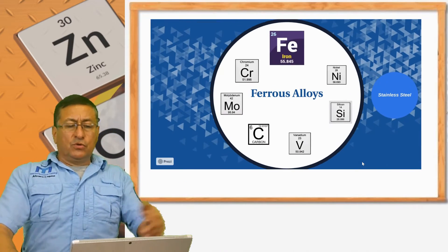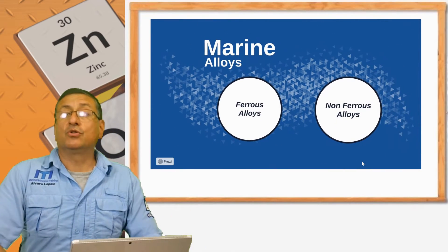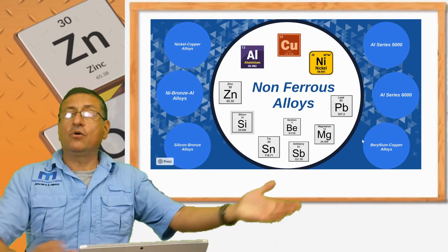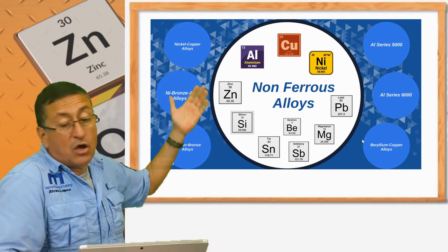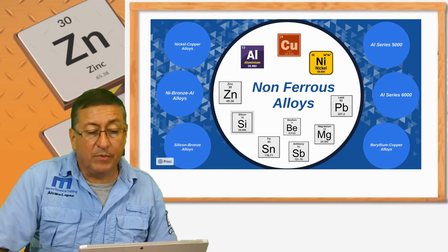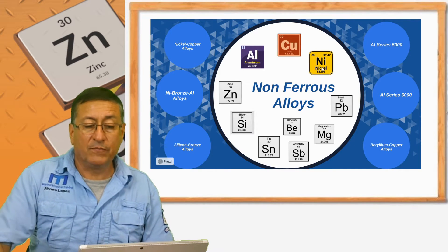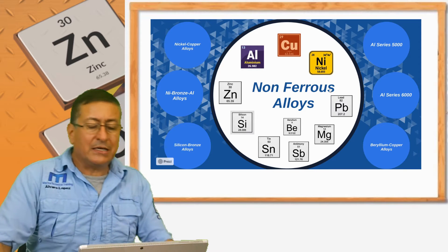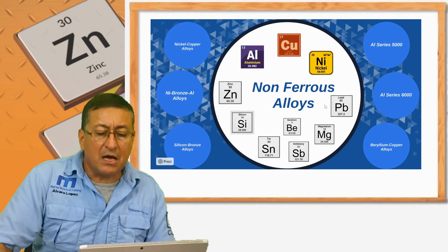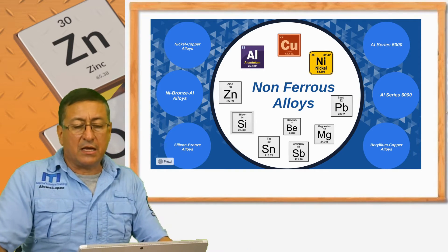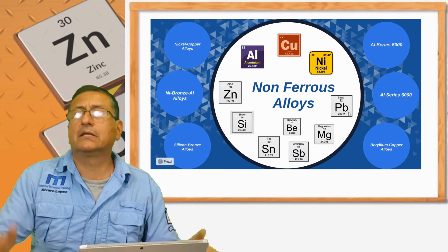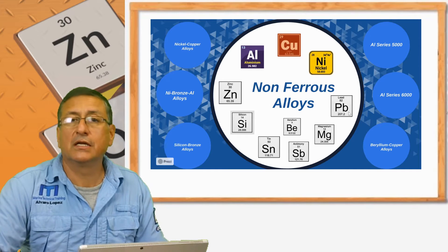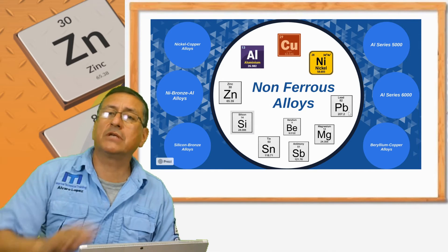Now we are going to continue with the non-ferrous alloys. The non-ferrous alloys are based on copper, aluminum, and nickel, with additional ingredients like zinc, silicon, tin, beryllium, magnesium, lead, and others.